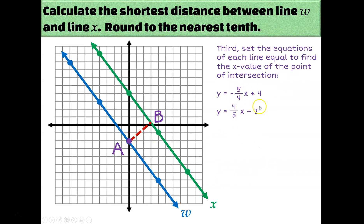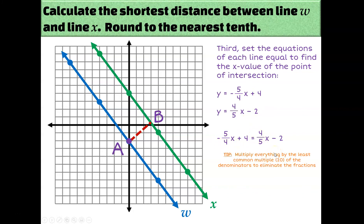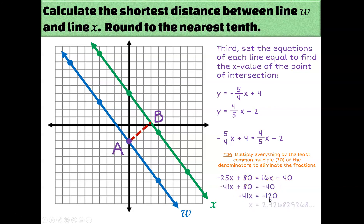Either way, the slope is 4 fifths and the Y-intercept is negative 2, so the equation for line AB is Y = (4/5)X − 2. Now we have two equations and I want to know where they intersect. Setting them equal to each other and multiplying through by the LCM of 20 to clear fractions gives bigger numbers but no fractions. Subtracting 16X and 80, then dividing by −41, we find approximately 2.9 for our X value, which seems pretty reasonable — B is almost all the way to 3, but not quite.